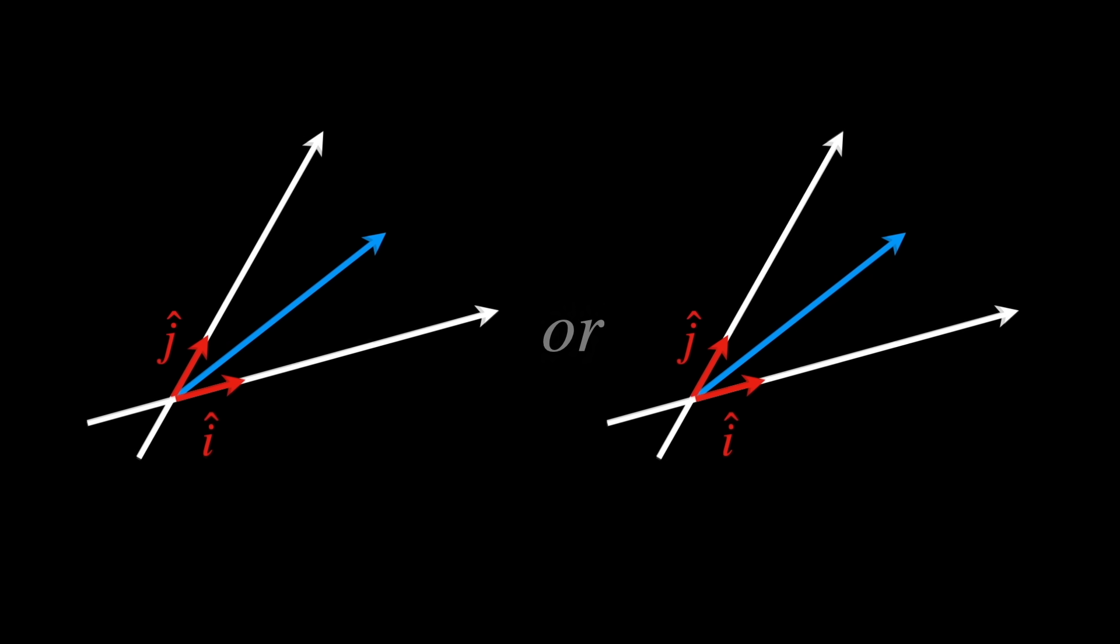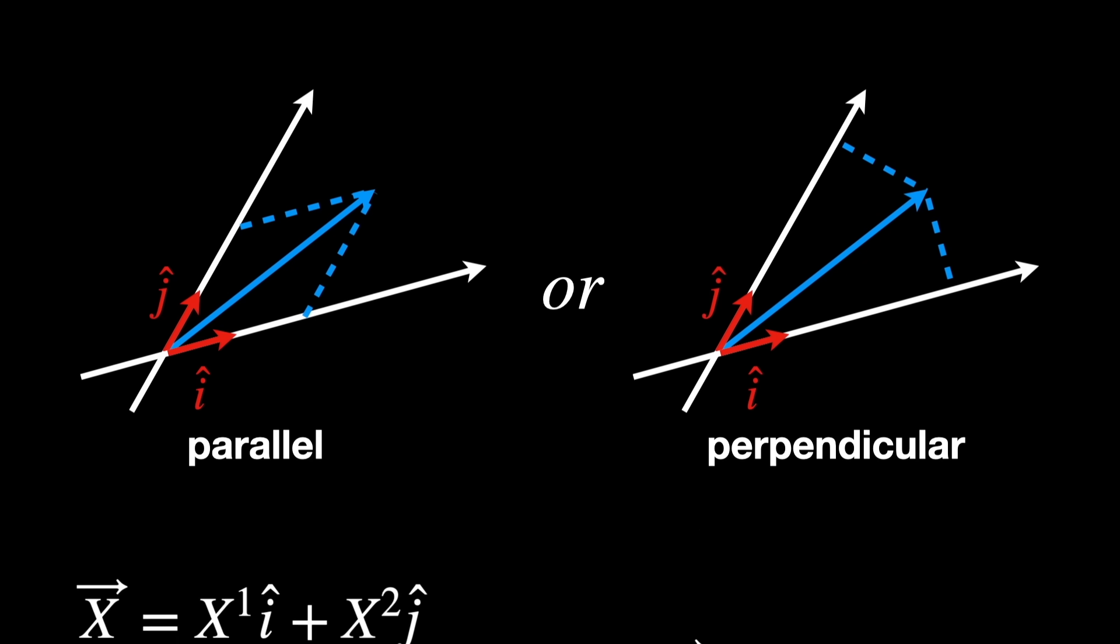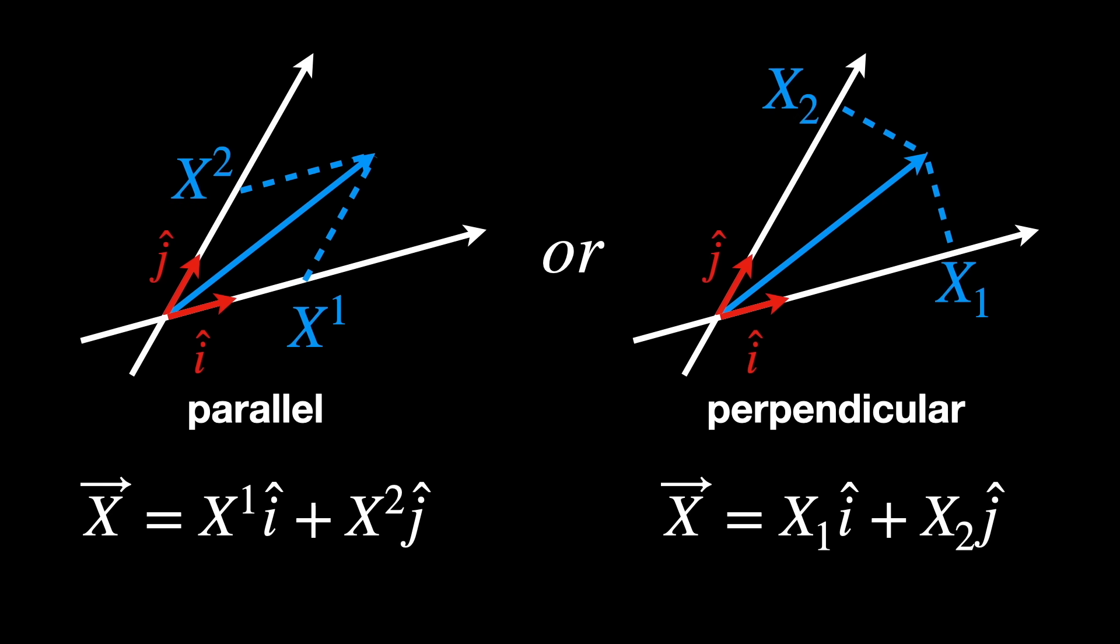The answer is yes, but we have two options now, so a duality. Either we can decompose the vector x using dashed lines that are parallel to the basis axis, or using dashed lines that are perpendicular to the basis axis instead. Both representations are valid, but as you can see, its components are different.